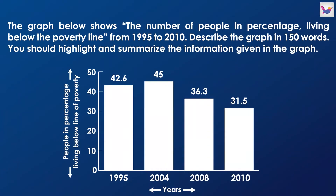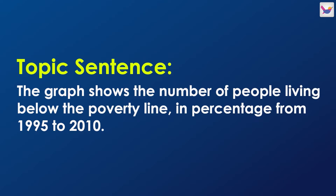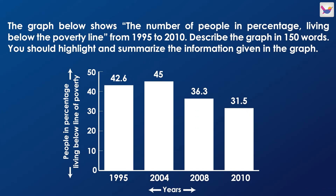On the screen there is a graph showing the number of people in percentage living below the poverty line. The graph shows the number of people living below the poverty line in percentage from 1995 to 2010. We relate to the graph that shows the number of people living below the poverty line.